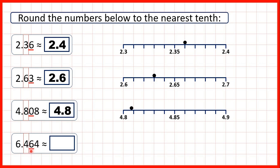We can underline our hundredths and because we have a six we know that we're rounding up. So the tenths digit increases by one so goes from 4 to 5.